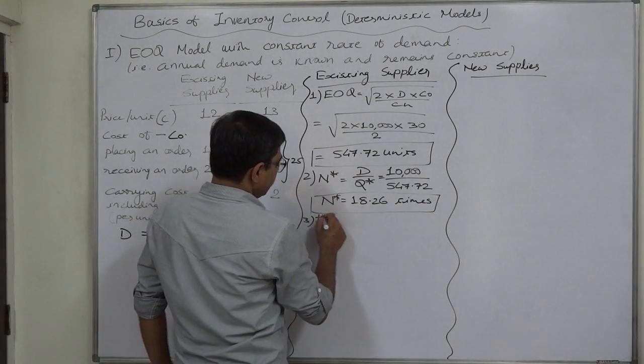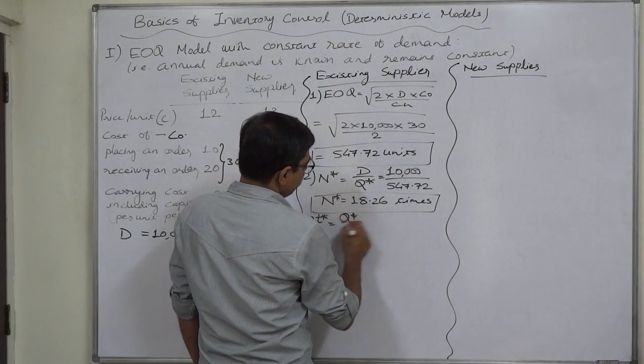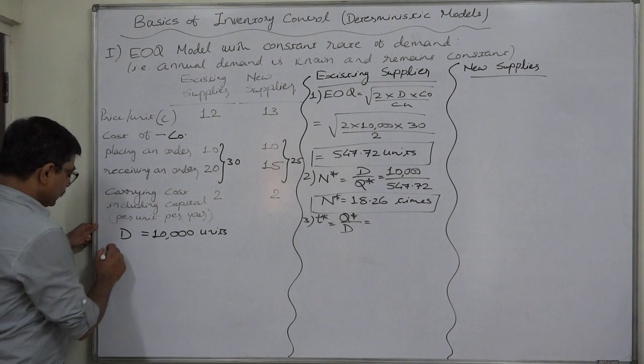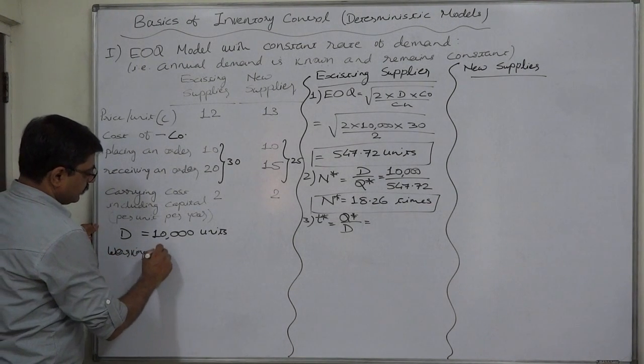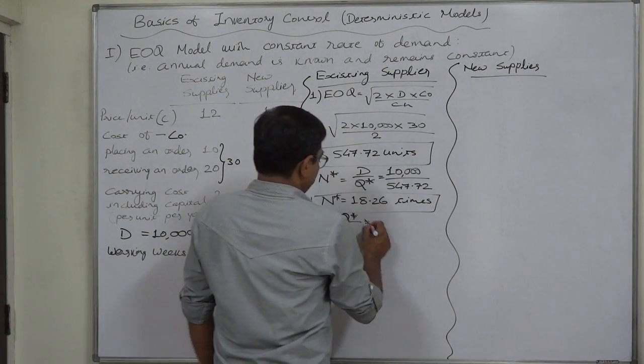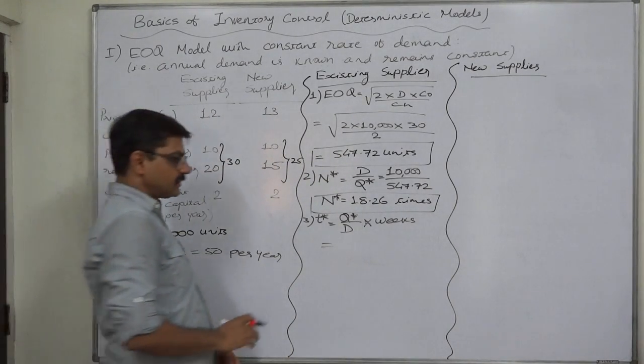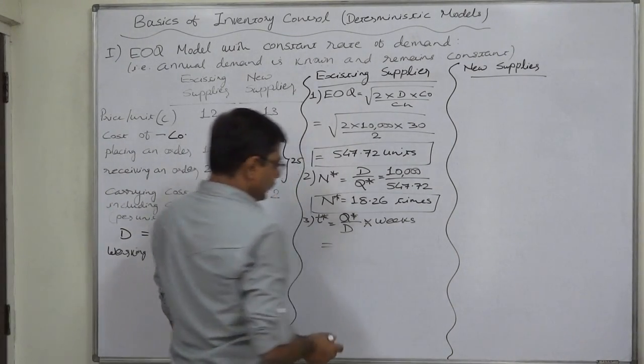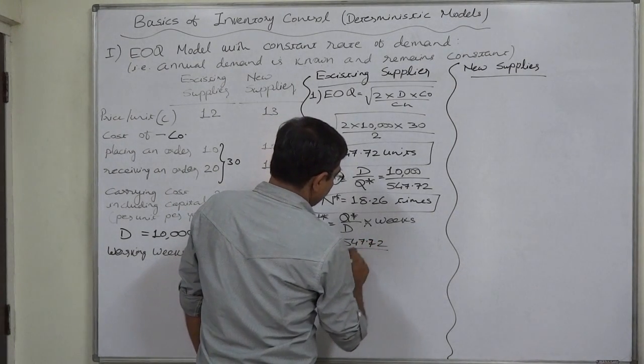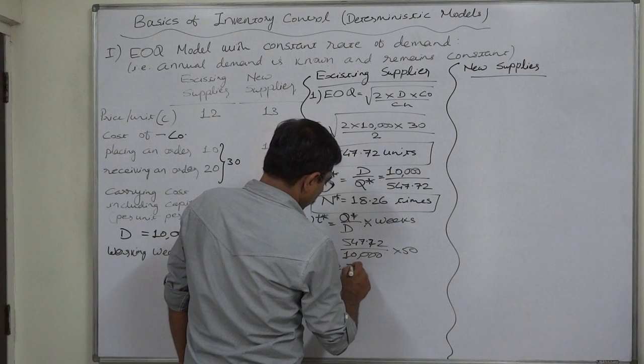Number three, we are interested in gap between two consecutive orders, that is T star. It is Q star divided by D, which is in terms of years, so let us multiply it by number of working weeks, so that we can get answer in terms of weeks, because Q star divided by D gives a ridiculous answer in terms of year and that is very small unit of time. Now 547.72 divided by 10,000 into 50, this is also very small number: 2.74 weeks.